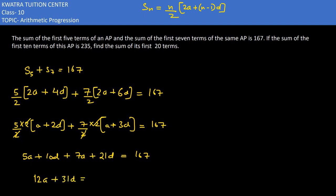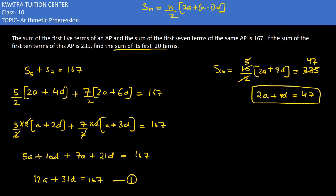So this is your first equation. Now let's try to find out the second equation so that we can find the sum of the first 20 terms. So we have S10. How do we expand? 10 by 2, 2a plus 9d. So we have 5 bracket 2a plus 9d equals 47. So this is your second equation.